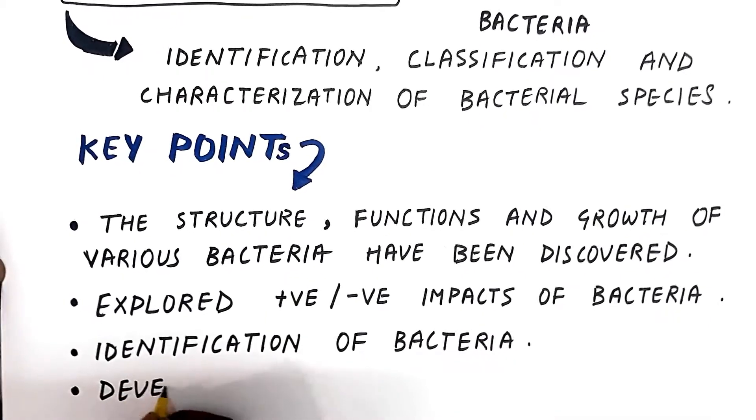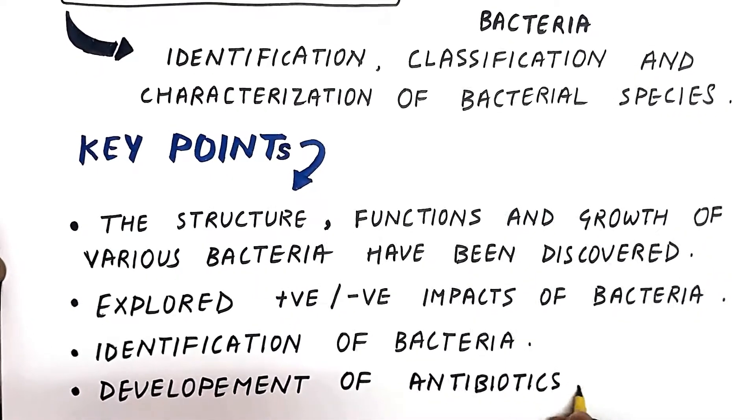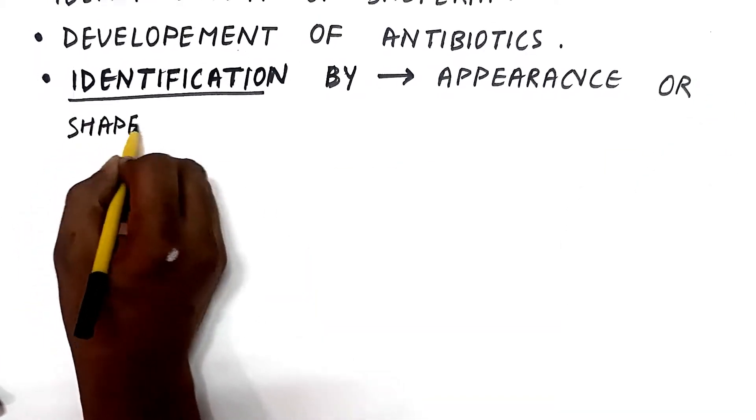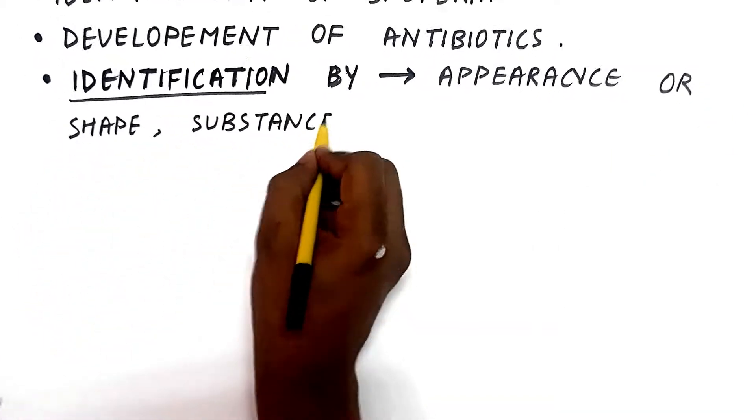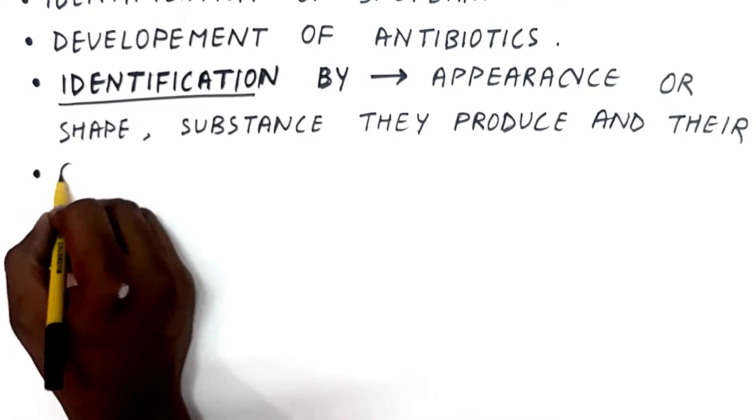Other ways to identify bacteria are through their appearance or shape, the substances they produce, and through their chemical reaction when tested in the laboratory. For example, rod-shaped bacteria are called bacilli while round-shaped bacteria are known as cocci.